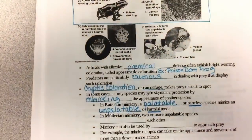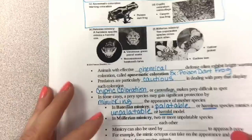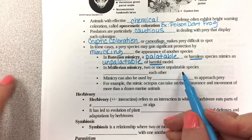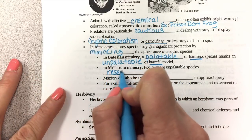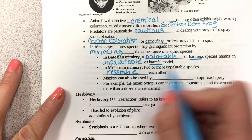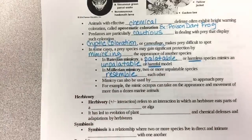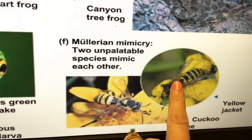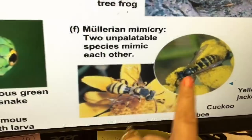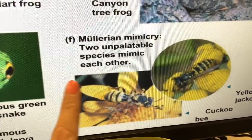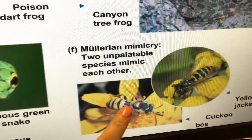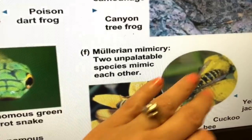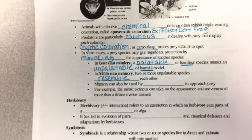In Müllerian mimicry, two or more unpalatable species resemble each other — they're both harmful. For example, the cuckoo bee and the yellow jacket look alike and mimic each other. If a predator encounters one and has a bad experience, it won't mess with the other because they look identical. So they mutually benefit from resembling each other.